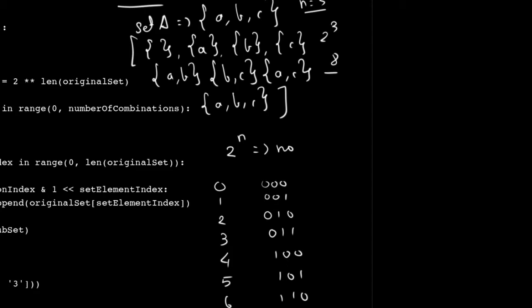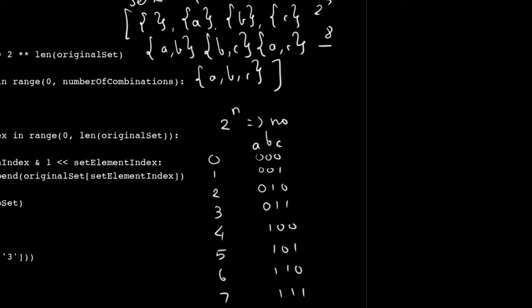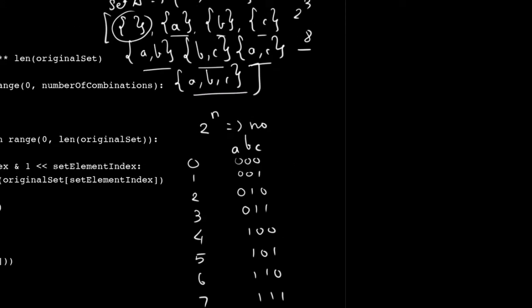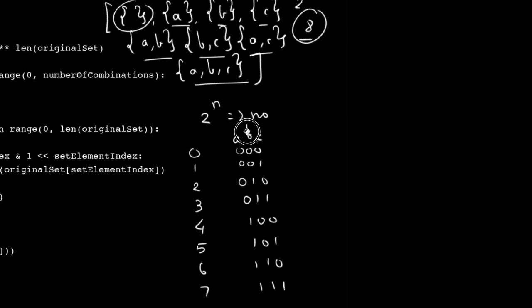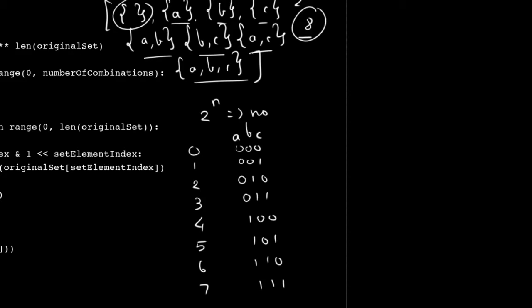Now look at this and try to imagine a, b, and c in the bit positions. Where 000 exists there is an empty set. Where 001 exists, for c, there is {c}. Where 010 exists, there is {b}. Where 011 exists, there is {b, c}. Where 100 there is {a}. 101 gives {a, c}. 110 gives {a, b}. And 111 gives {a, b, c}. Literally just converting each index to binary and matching those bit positions to the set elements gives us the entire power set. If this does not blow your mind, I don't know what will — it's insane.